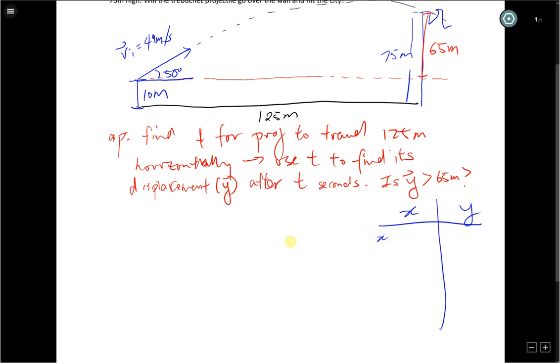I know that my horizontal displacement is 125 meters. In my y direction, we don't know. This is the one that we want to find. We hope it's greater than 65 or not, if you don't want the city to be destroyed. We can find the time. Right now, we don't know what the time is. We do know the acceleration due to gravity is negative 9.8 meters per second squared. We can find the Vix, the horizontal velocity component, and we also can find the initial vertical velocity component as well.